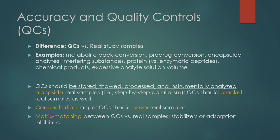Secondly, you can think about pro drug conversion. In the real sample there is pro drug remaining, but in the QC sample we have only the analyte. There is a pro drug conversion occurring in the real sample, so of course ISR will fail. Another case is encapsulated analyte: in the real study sample the analytes are encapsulated, but in the QC sample it was just non-encapsulated analyte. There is a difference between the QC sample and the real study samples, so ISR will fail.